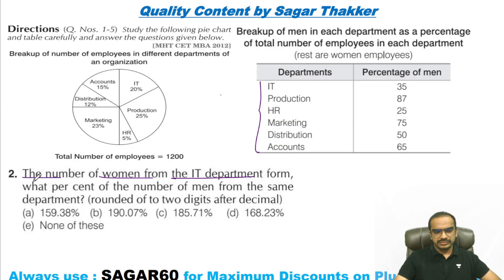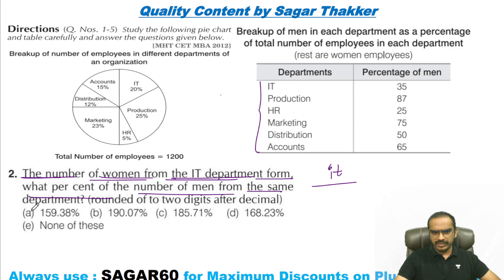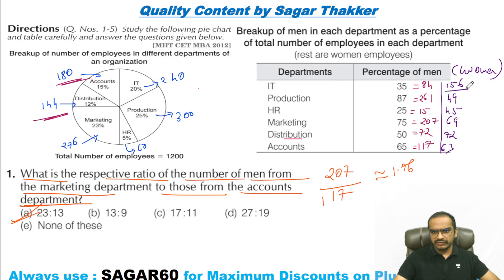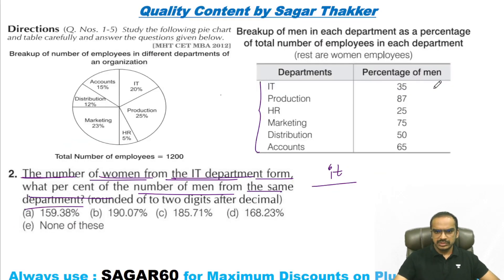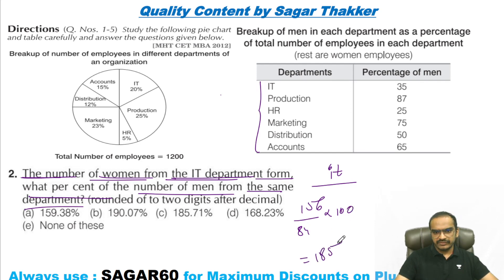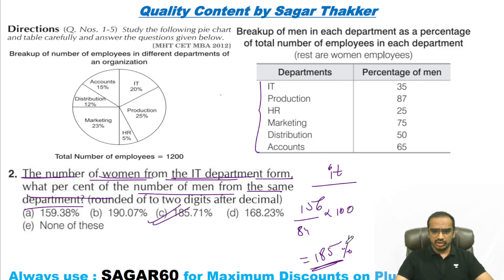Are we clear with this? The number of women from the IT department — what percent of number of men from the same department? So IT men and women we need to find. IT has 156 women and 84 men. So 156 divided by 84 into 100 — that is 185.7 percent, to be precise.